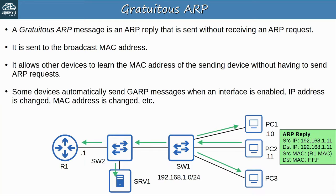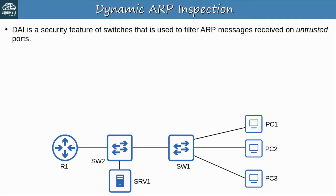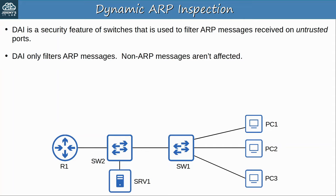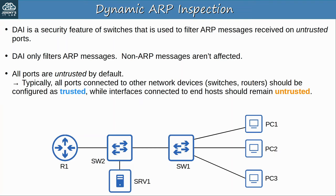Let's move on to Dynamic ARP Inspection. DAI is a feature of switches that is used to filter ARP messages received on untrusted ports. It only filters ARP messages — all other messages will be unaffected. Just like DHCP snooping, all ports are untrusted by default. Typically, all ports connected to other network devices such as switches or routers should be configured as trusted, while interfaces connected to end hosts should remain untrusted.